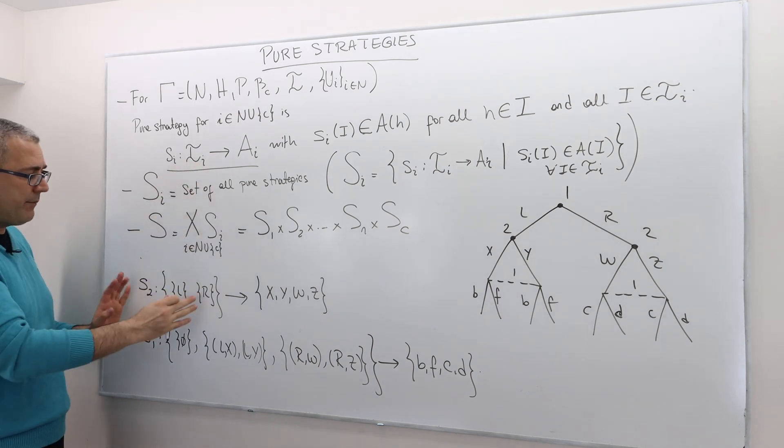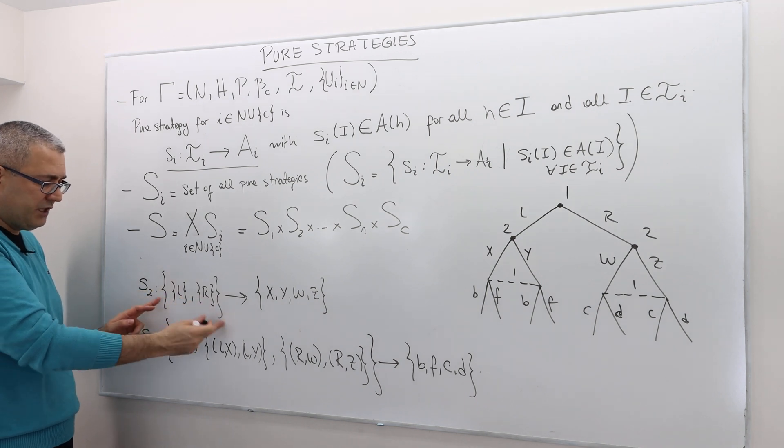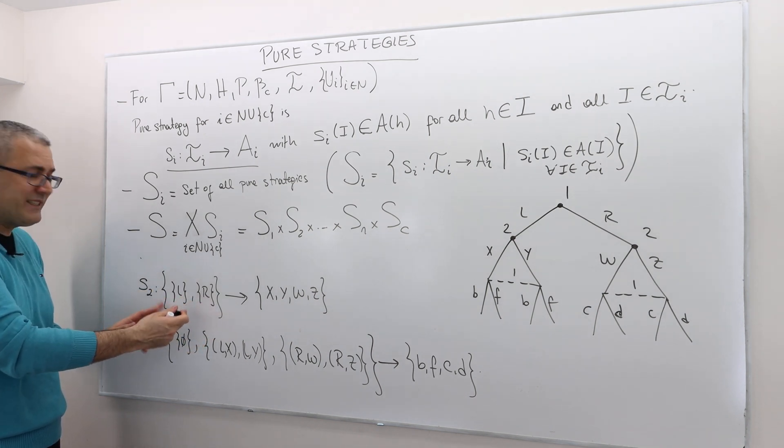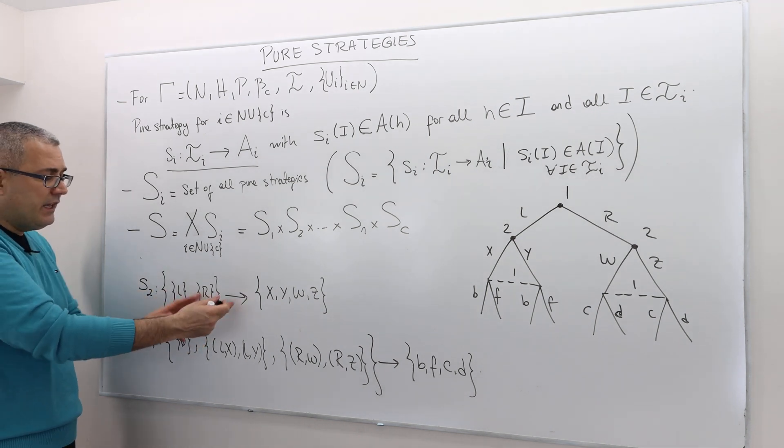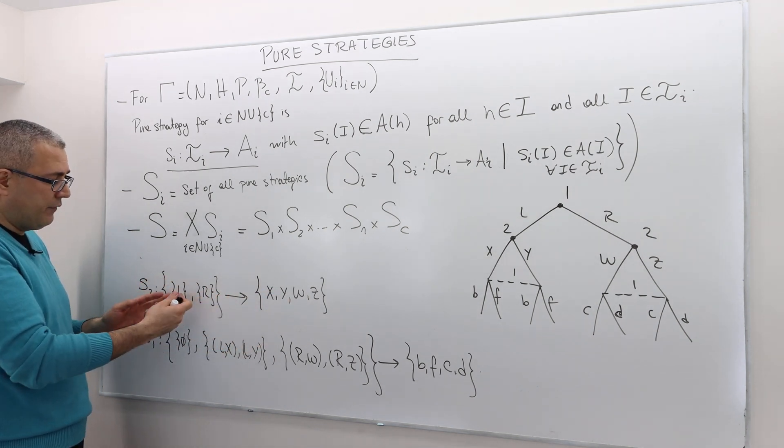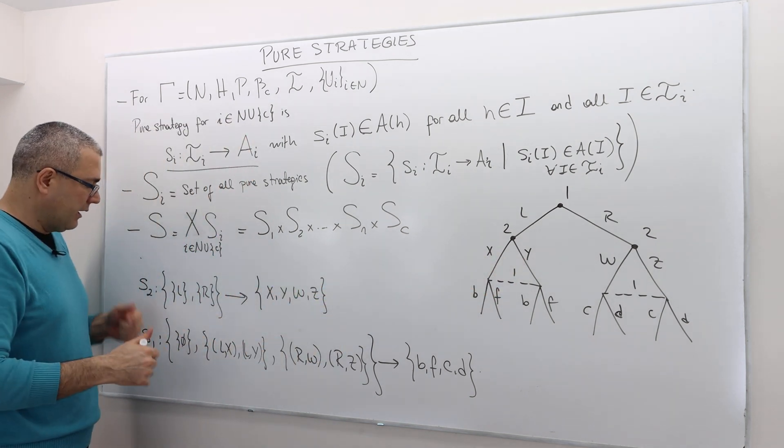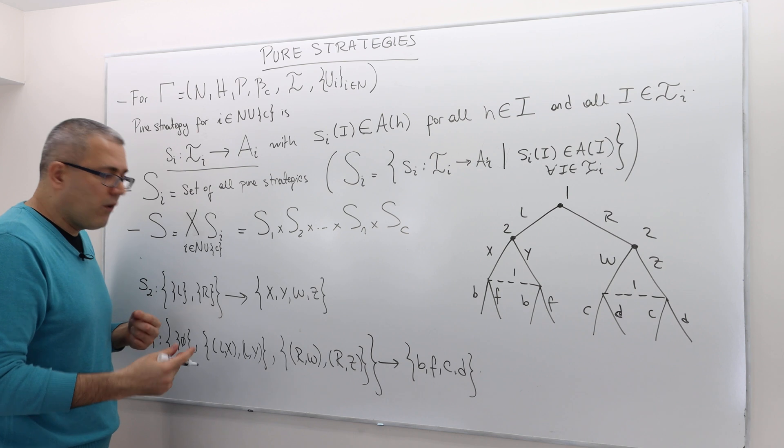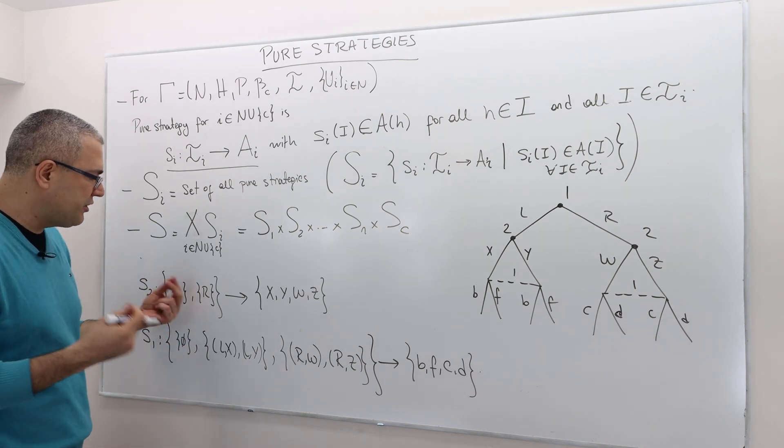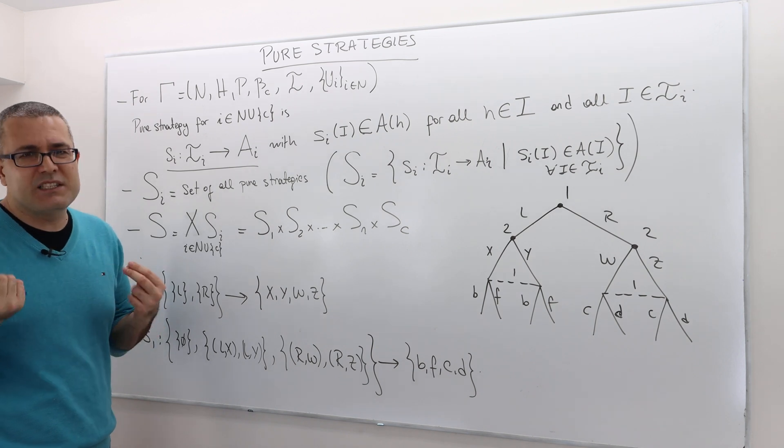Well, the player two strategy, remember, maps her information partition, which is this set of sets, into available actions. So remember, available actions for her after those two histories are X, Y, W, Z. So for example, one history - well, obviously denoting the strategies as vectors is easier, rather than a function.